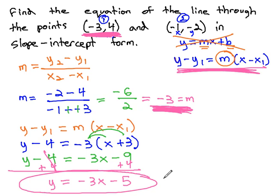y equals negative 3x minus 5 is the equation in slope-intercept form that goes through the points (-3, 4) and (-1, -2). We found this equation by first identifying the slope using the slope formula, and using that slope with a point in the point-slope formula, and then solving that formula for y to be in the correct form.